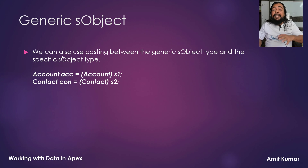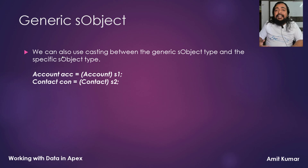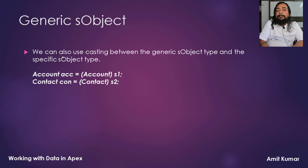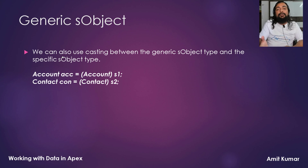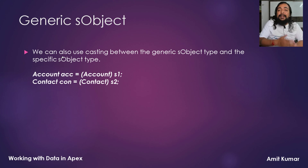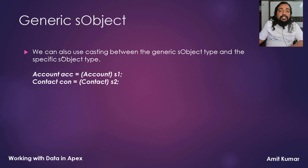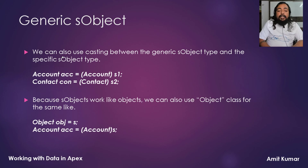Another interesting fact is we can use casting between the generic sObject type and any specific sObject type. For example, if you have an sObject variable s1 or s2 and you want to typecast it to a specific Salesforce object — let's say Account or Contact — you can do that using a typecast operator and specifying the destination type. For example: Account acc = (Account) s1, and the same goes for a Contact variable con.